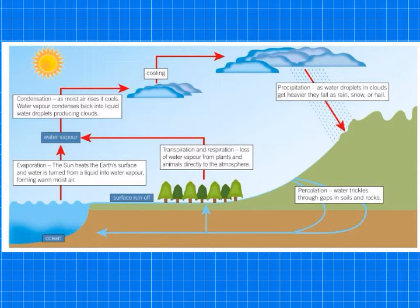So to recap, the key words that you're really going to need to know are going to be precipitation. You're going to need to know about transpiration and respiration, loss of water vapor from plants and animals. Evaporation from the sun's heat, the sun heats the earth's surface and the liquid turns to water vapor. You'll need to know about condensation as well, and then the cooling and back to precipitation. So those are the main stages of the water cycle.